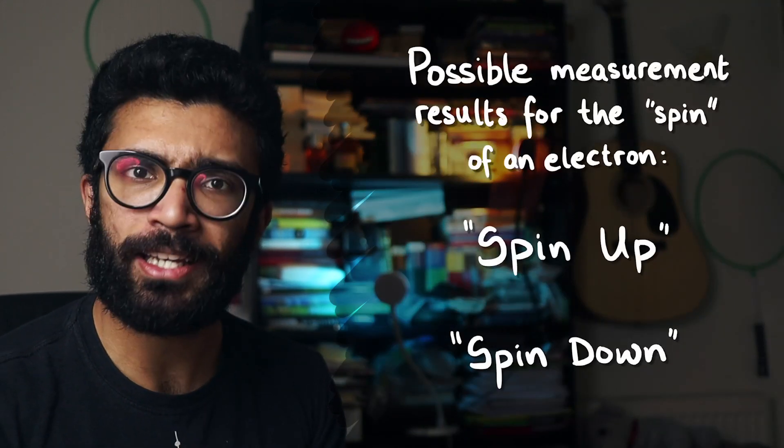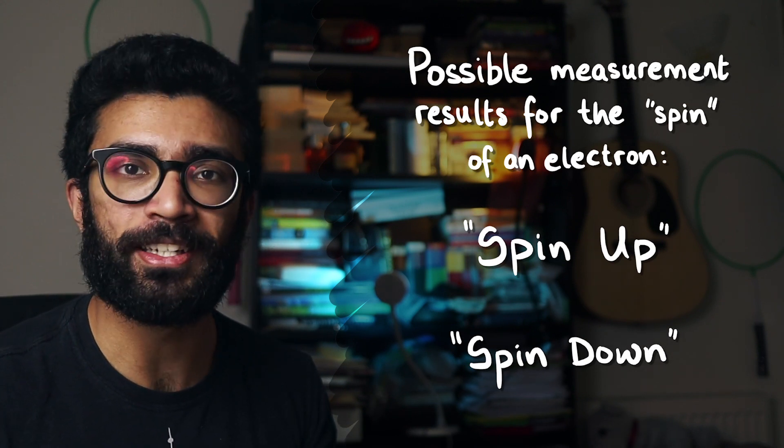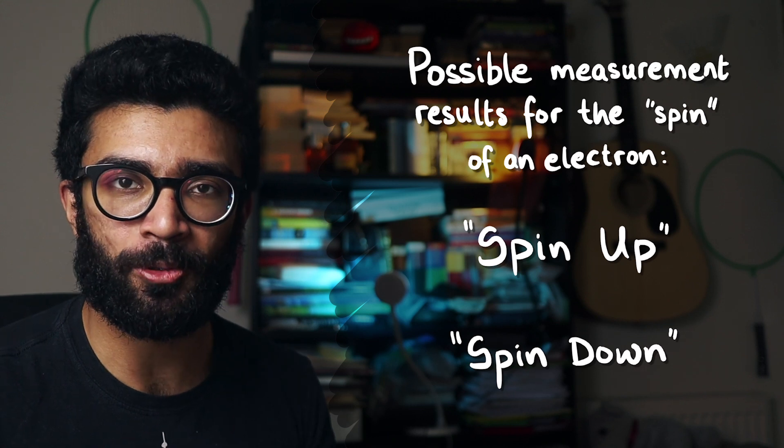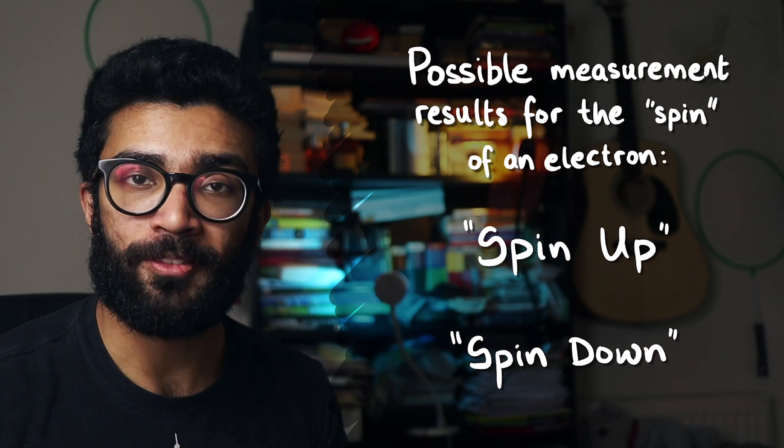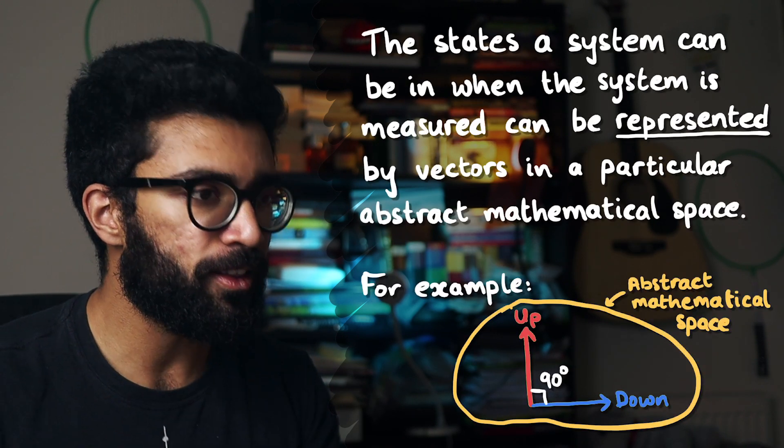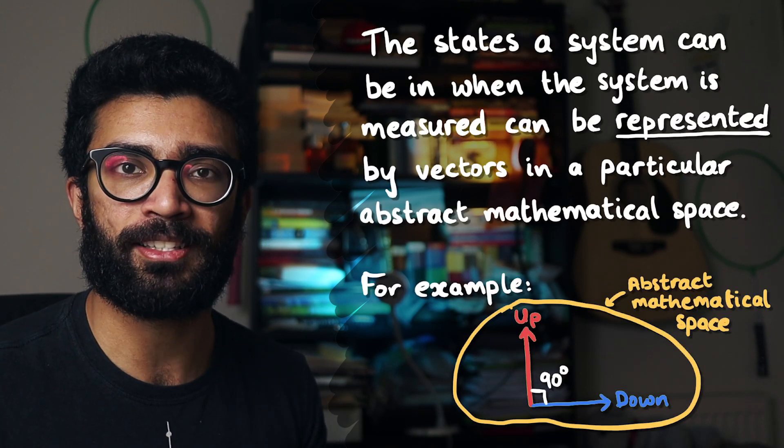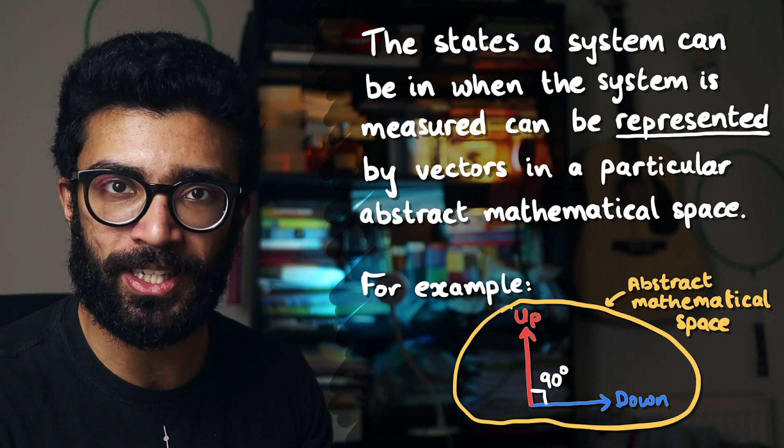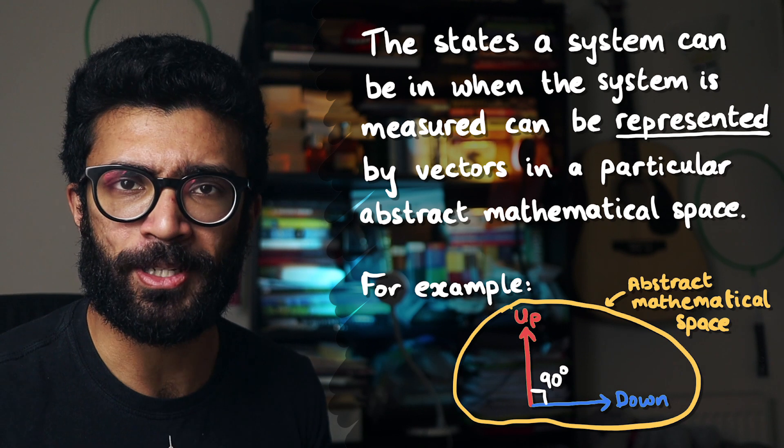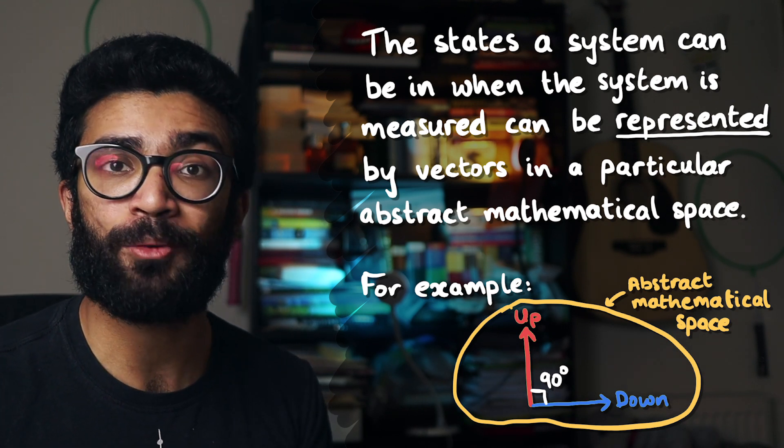But the idea was that electrons have a property called spin. And when we measure the spin of an electron, whatever that means, we don't need to know that for now, we can find it in one of two possible states. One of them is called spin up and the other is called spin down. However, I explained in my previous video that spin up and spin down, as well as other quantum mechanical states that a system can take when we make a measurement on it, can be represented as vectors that are perpendicular to each other.